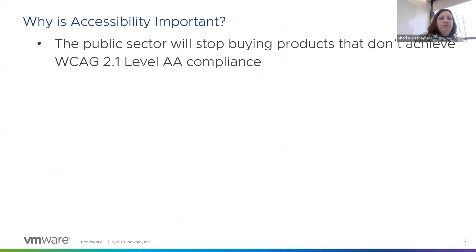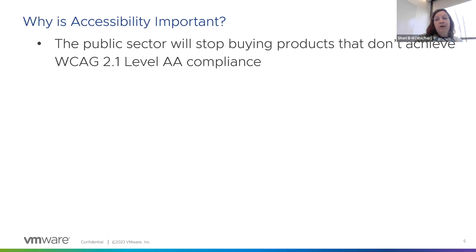So why is accessibility important? First, public sector is going to stop buying products that don't achieve WCAG 2.1 level double-A compliance. In three years, the European Accessibility Act will take effect, and the German government is actually reserving the right to recall software if it doesn't meet these standards. The standards are only getting more stringent and are being adopted by more and more countries. Kenya uses WCAG for their accessibility laws; India uses WCAG for their accessibility laws — it is really becoming ubiquitous in the public sector.